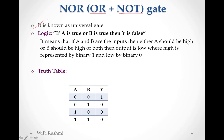NOR is a universal gate because by using NOR gate we can make any other gate - AND, OR, NOT, NAND. So logic of NOR gate: if A is true or B is true then Y is false. If you compare OR and NOR, it is simply the opposite of OR.